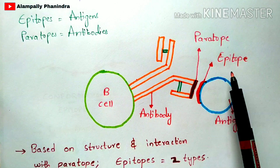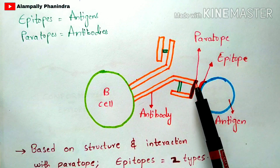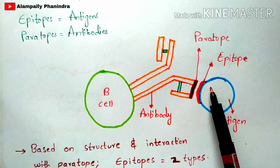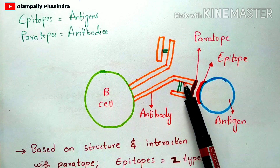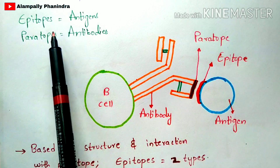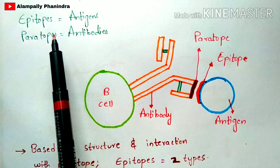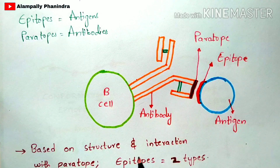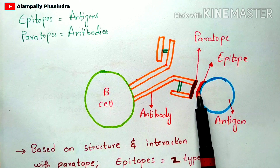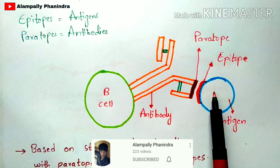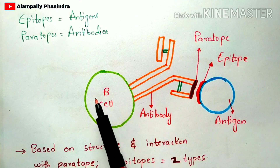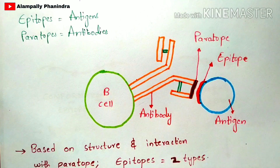To understand epitopes, you should also know about the paratope. The paratope is the region of the antibody where it gets interacted with the antigen. So the epitope belongs to the antigen and the paratope belongs to the antibody. You can define it as: the epitope is a region of the antigen where it gets binded to the paratope of the antibody. This antibody is present on the surface of B cells.